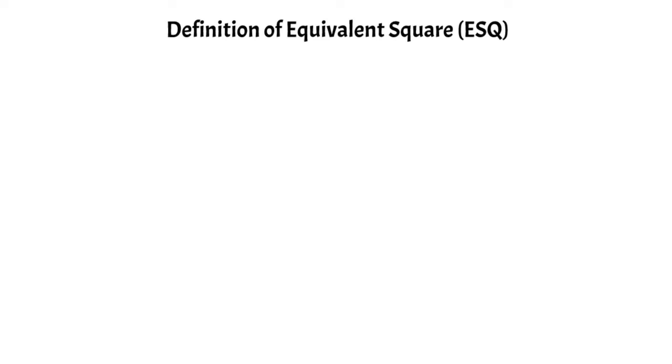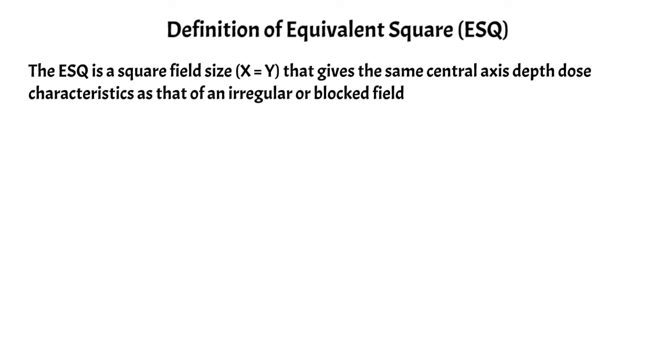An equivalent square, or ESQ for short, is essentially a square field that has the same central axis depth dose characteristics as that of an irregular or blocked field. If you have some rectangular field, you can calculate an equivalent square field size that would give you the same central axis depth dose characteristics.